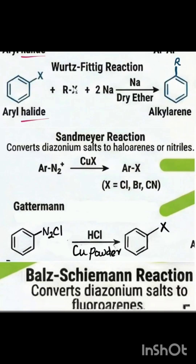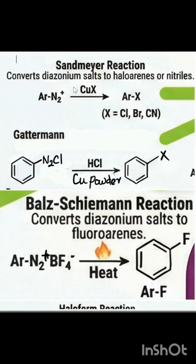The next group is Sandmeyer and Gattermann. In Sandmeyer, we use copper chloride, copper bromide, or copper cyanide. In Gattermann, we use copper powder with corresponding HCl or HBr. In both, benzene diazonium chloride is formed as the starting material, and aryl halides or aryl cyanides are formed as products.